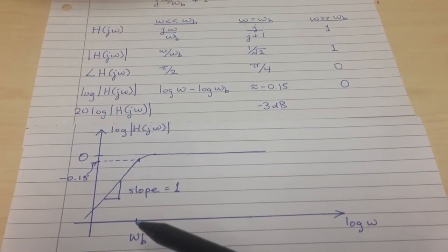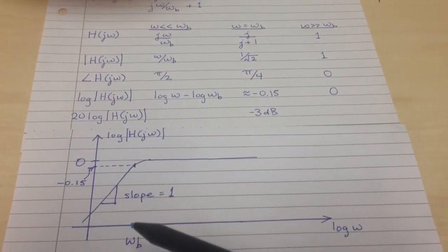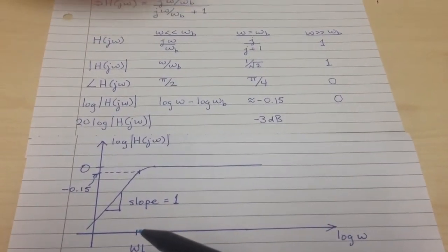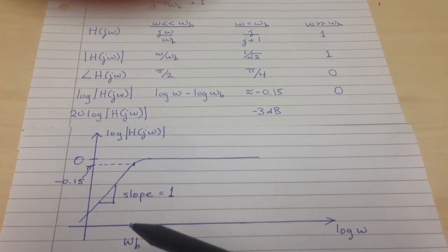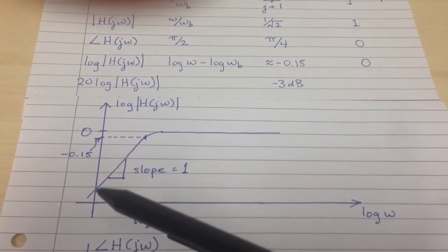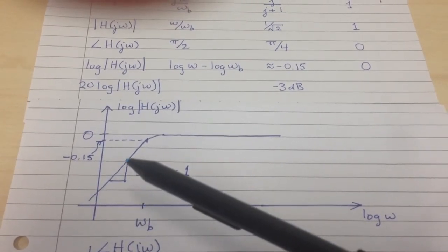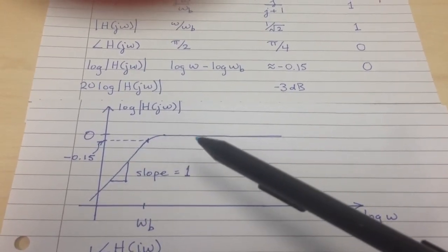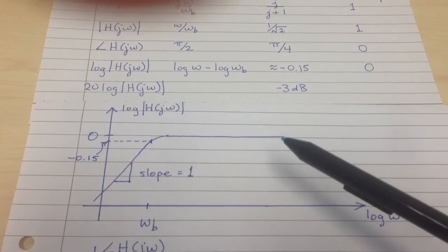The key frequency here is the break frequency, which is R over L, and that's where it switches between these two behaviors. You can see from this why we call it a high-pass filter, because low frequencies get attenuated, but high frequencies pass with no attenuation.